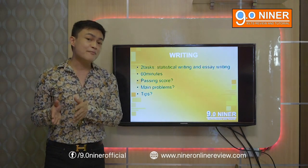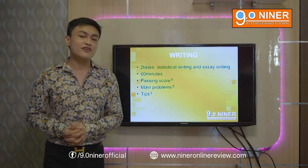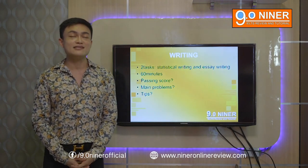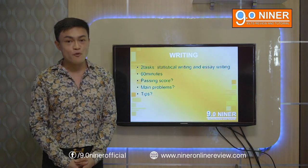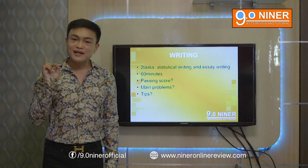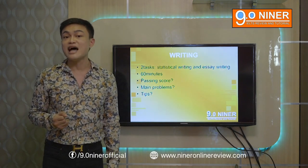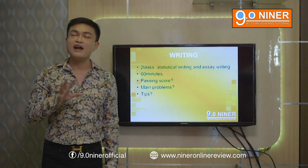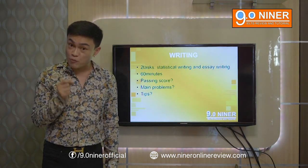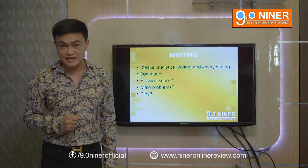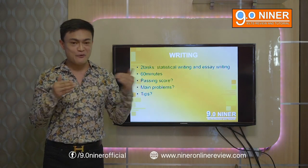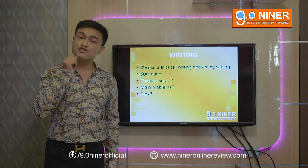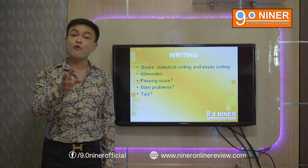The last two criteria are vocabulary and grammar, which are assessed in both writing and speaking. The national average of Filipinos for vocabulary is 6.3 in writing task one and 7.0 in writing task two. For grammatical range and accuracy, the national average is 6.2 in writing task one and 6.3 in writing task two. Taking into account that task one is 33% and task two is 66%, the national average grade of Filipinos in writing overall is 6.2 to 6.3.